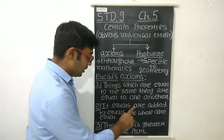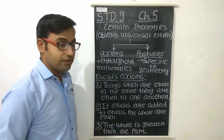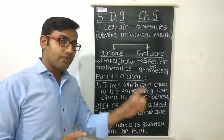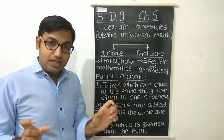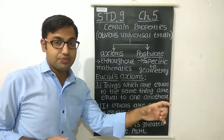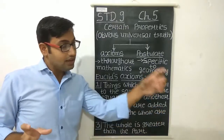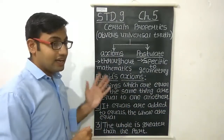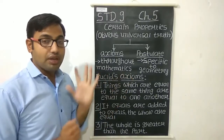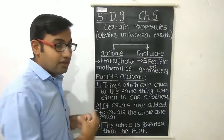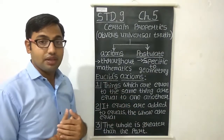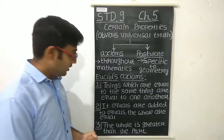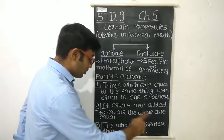The second axiom is: if equals are added to equals, the wholes are equal. For example, suppose we have two equal values — say 20 and 20. If we add 5 to both sides, we get 25 on each side, so both sides remain equal. We used this in standard 8 while solving linear equations in one variable — when we add or subtract the same thing from both sides, the equality remains the same.